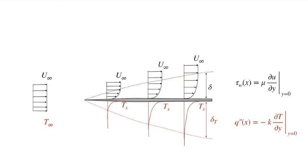Correspondingly, we have a thermal boundary layer, where the temperature is transitioning from the surface temperature T_s out to the ambient temperature T-infinity, and that is described by a length scale delta_T, the thickness of the thermal boundary layer.